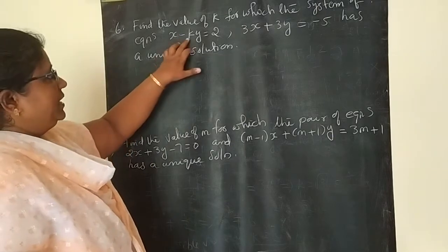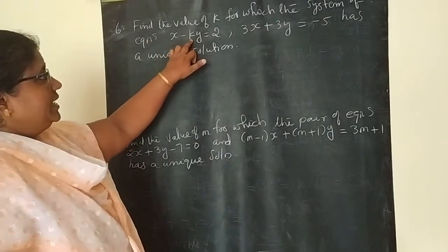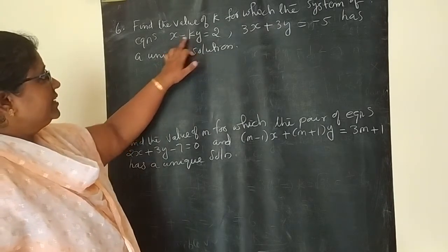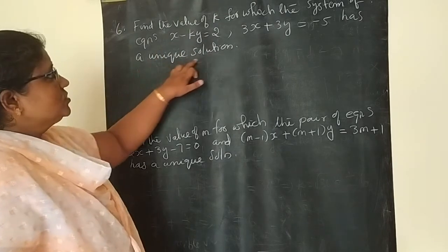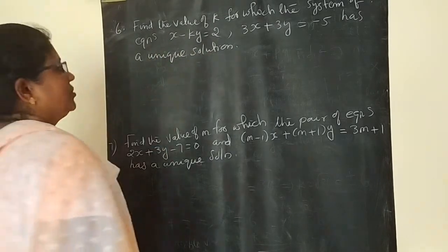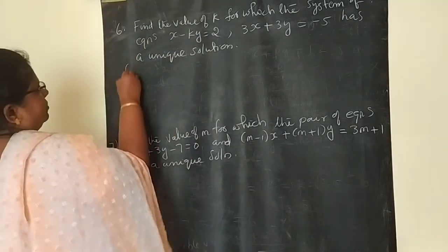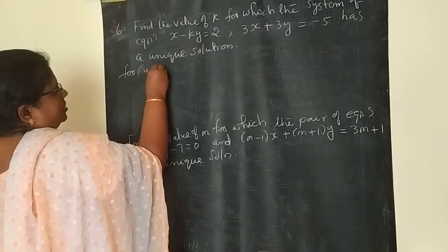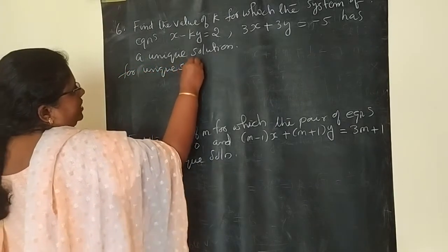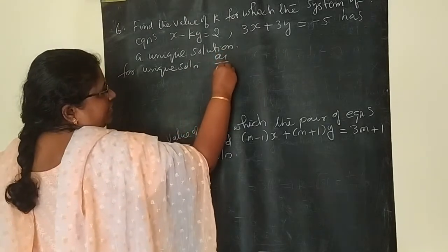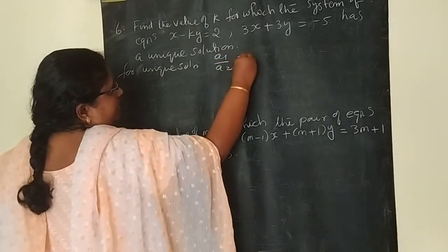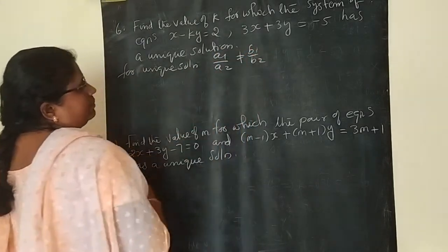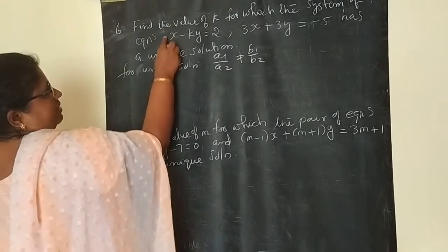All the questions are of the same type here. K is the variable. We have to find the value of K under the condition that it gives a unique solution. So you have to write the condition for unique solution. The condition is A1 by A2 not equal to B1 by B2.